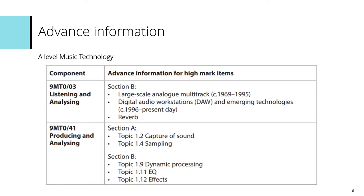The advanced information for Component 3 is for Section B: Large Scale Analog Multitrack, Digital Audio Workstations and Emerging Technologies, and Reverb. The advanced information for Component 4 is for Section A, Topic 1.2 Capture of Sound and Topic 1.4 Sampling. For Section B, there is Topic 1.9 Dynamic Processing, Topic 1.11 EQ, and Topic 1.12 Effects.